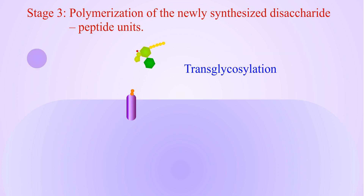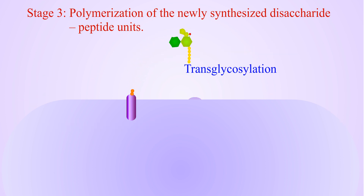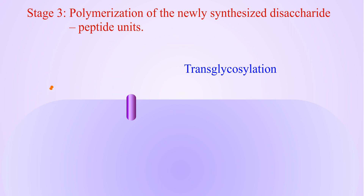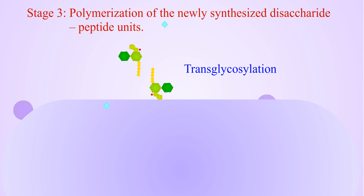During transglycosylation, the reducing end of N-acetylmuramic acid is transferred onto the C-4-carbon of the glucosamine residue of the lipid-linked peptidoglycan precursor, along with the release of undecaprenol pyrophosphate. These released undecaprenol pyrophosphate molecules are then dephosphorylated back to the bactoprenol lipid carrier.